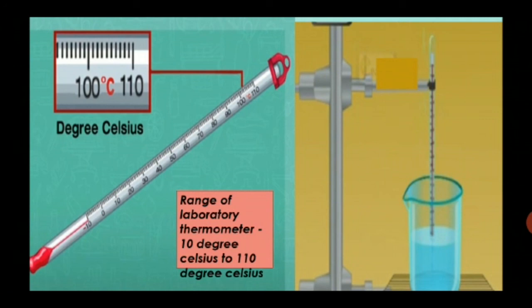The commonly used laboratory thermometer have a range from minus 10 degree Celsius to 110 degree Celsius. The lower fixed point is 0 degree Celsius or minus 10 degree Celsius.